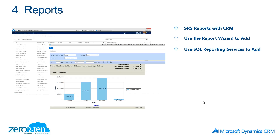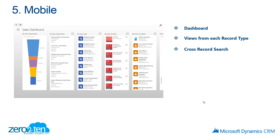Next we'll look at reports. We have the ability to leverage reports that are out of the box, create our own reports using a report wizard, and ultimately your organization has the ability to use full SQL Reporting Services capabilities and add those reports inside of CRM. We'll wrap up with mobile — looking at how dashboards work, how you can look at different views for each record type, and how you can use cross-record search inside the mobile application.